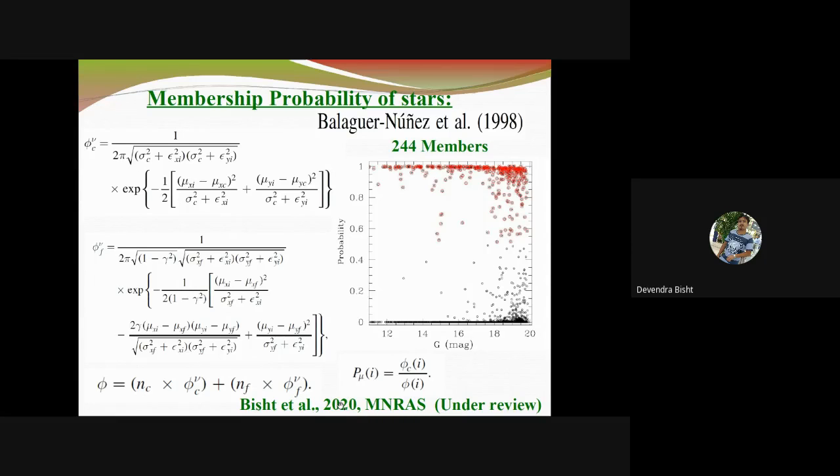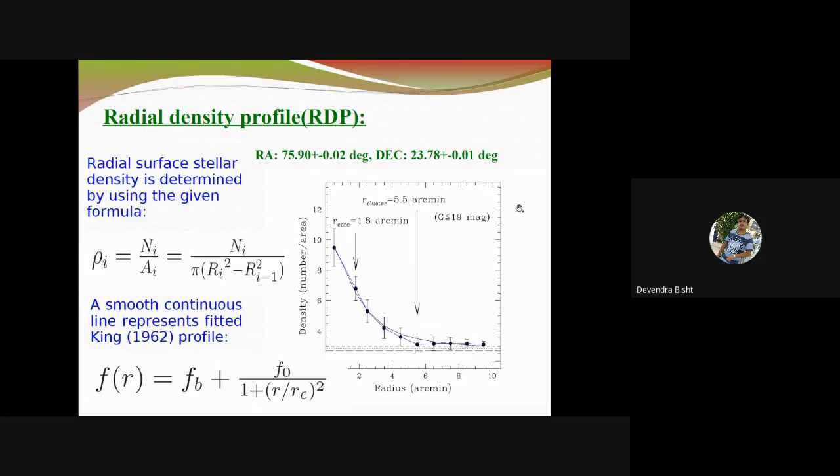You can see in this diagram, after estimating membership probability, how we have separated cluster stars from the field region stars. They all are field region stars which are clearly separated from the cluster region, and these are the cluster members. In this way we found 244 stars as cluster members.